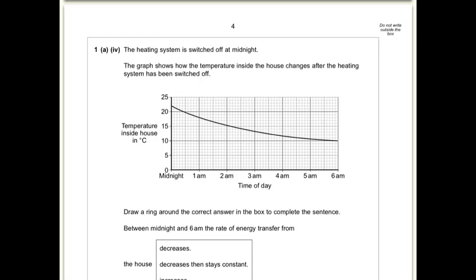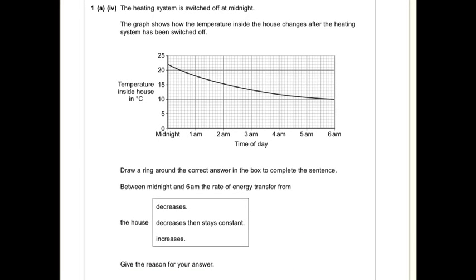The heating system is switched off at midnight. The graph shows that the temperature inside the house changes after the heating system has been switched off. Draw a ring around the correct answer in the box to complete the sentence. So between midnight and 6, the rate of energy transfer from the house does decrease, stay constant, or increases. Well, if you look at the graph, you can see it keeps decreasing. It slows down, but it's decreasing. So you can see it decreases.